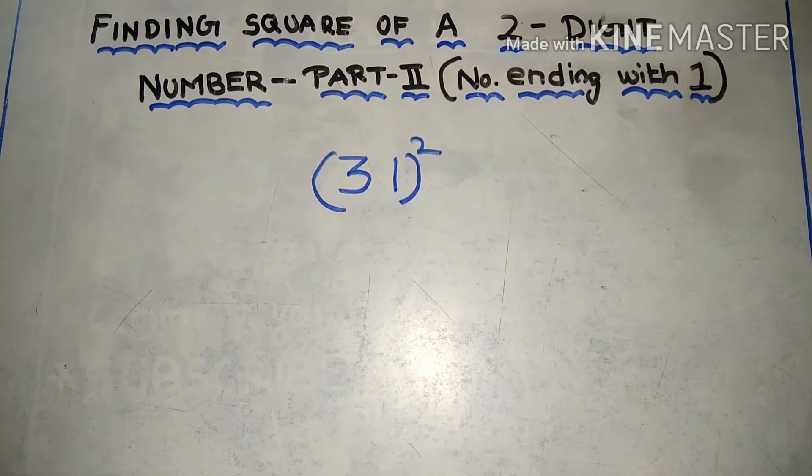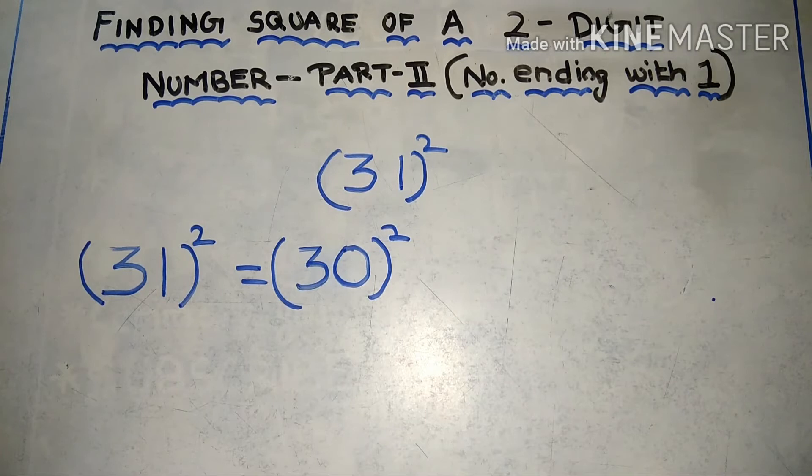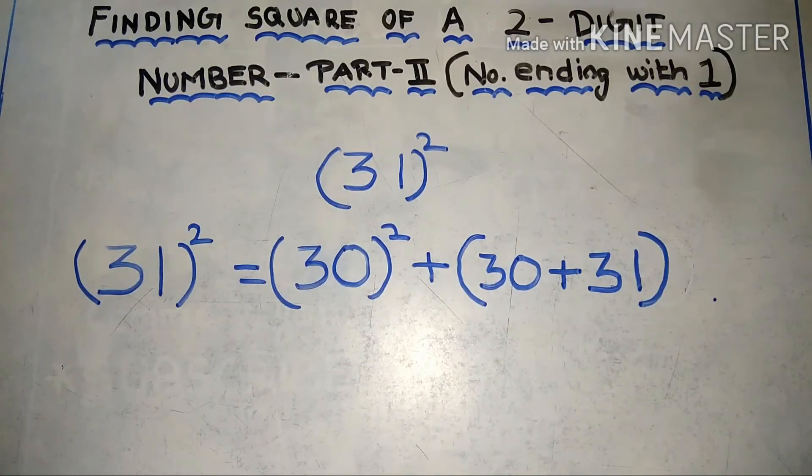We are going to find the square of 31. 31 square can be written as 30 square plus 30 plus 31.